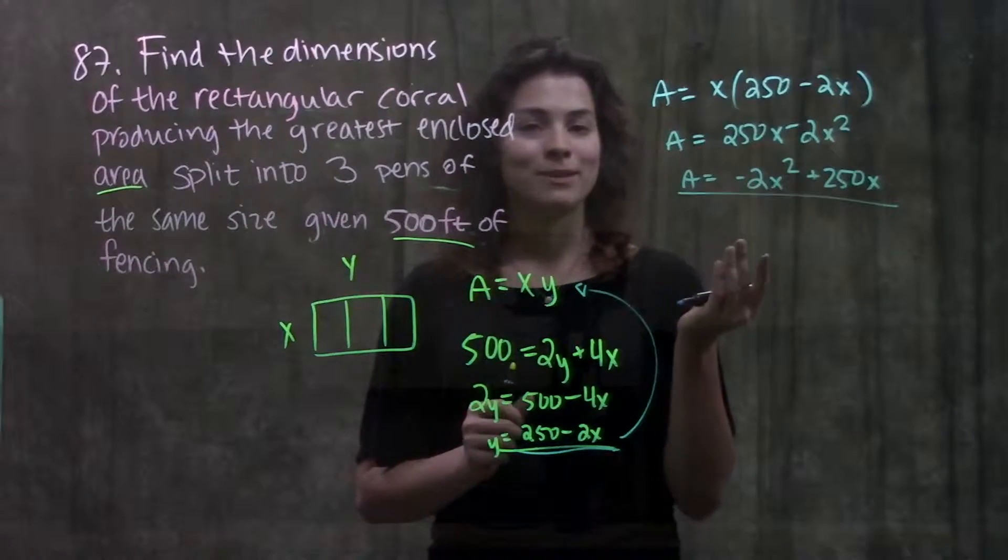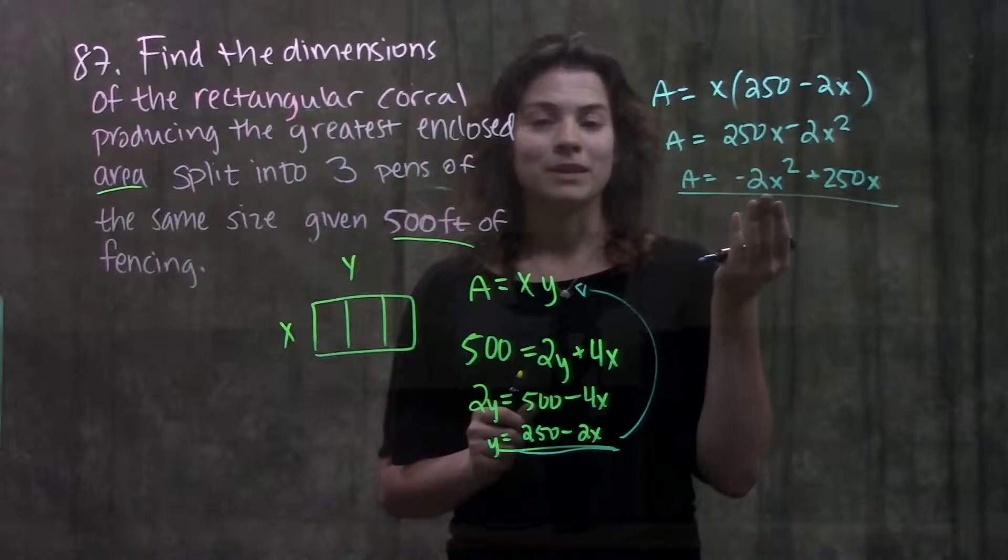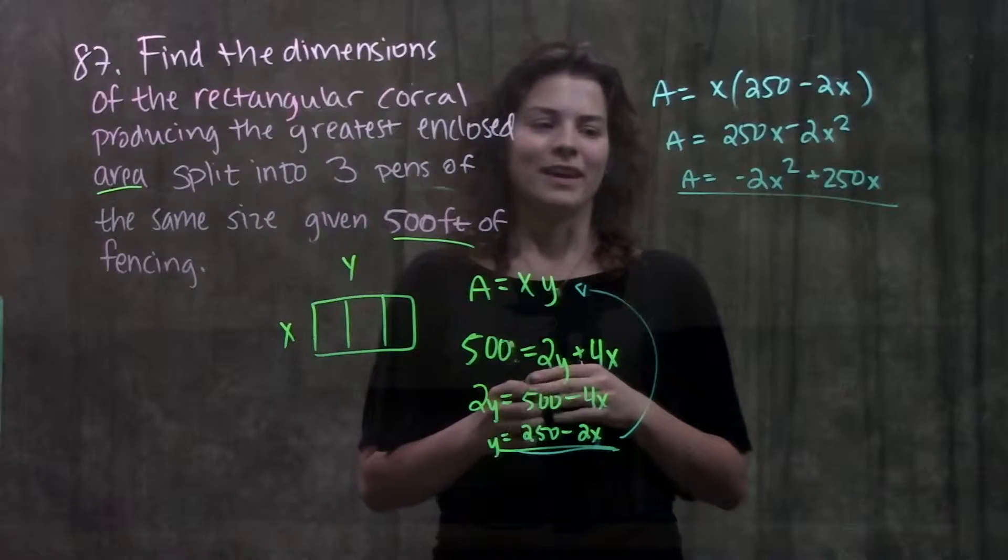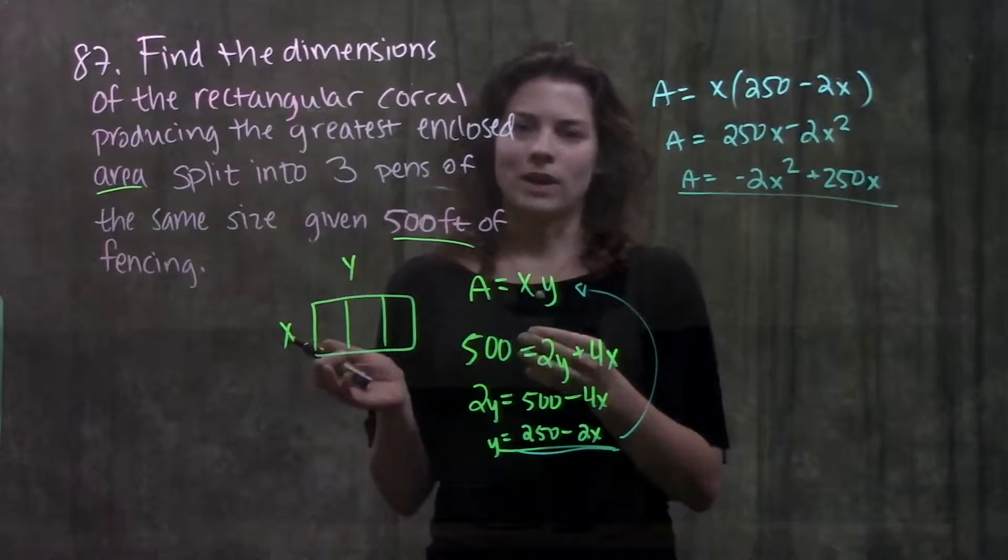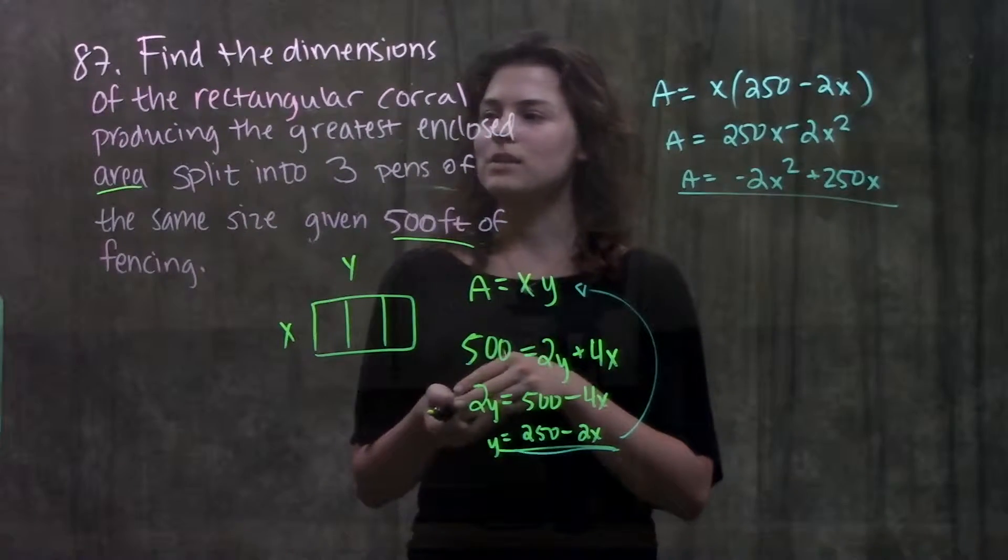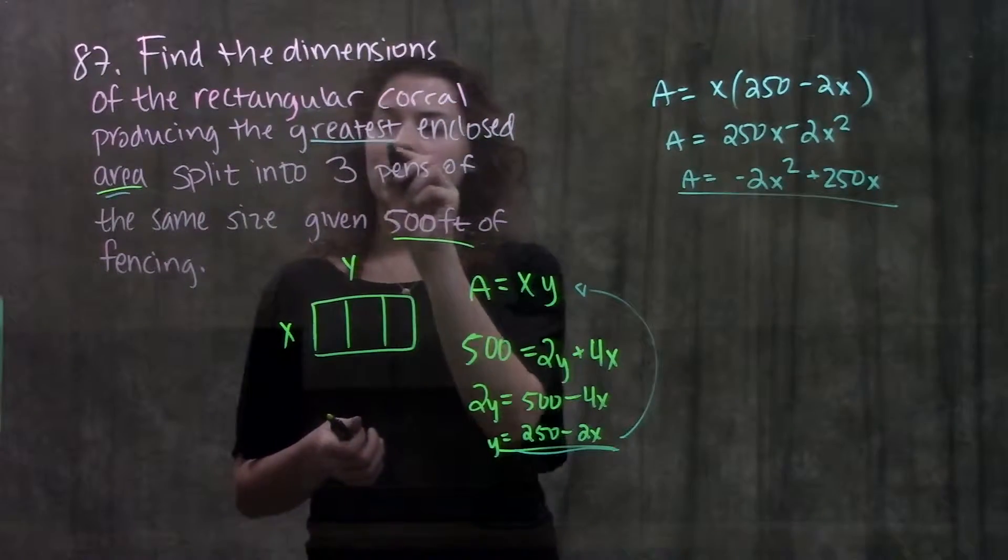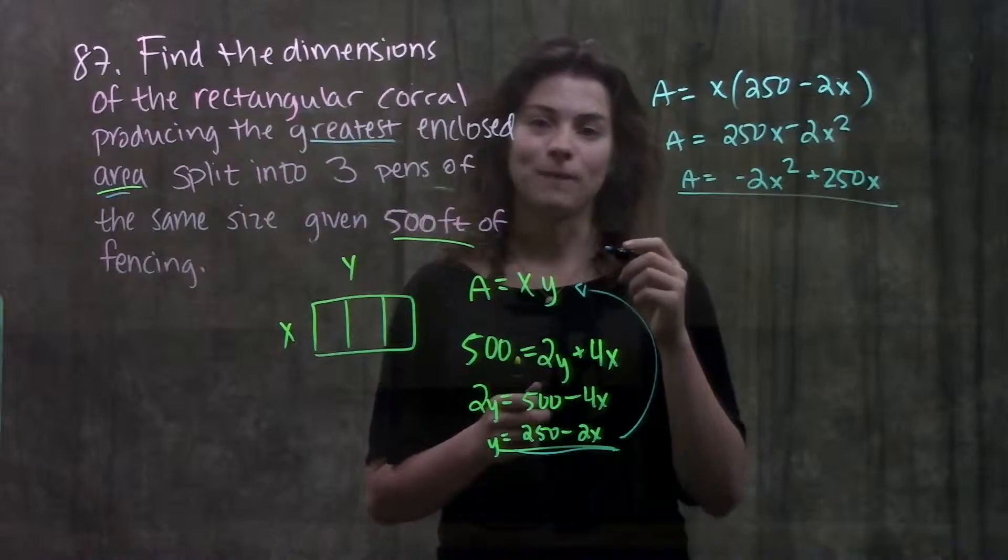Alright and at this point you might see where this is going. This looks really similar or really familiar. We have a quadratic here. Alright but how does quadratic relate to what they're asking us? Well if we go back to the problem to see what they were originally asking us for, they're asking us to find the greatest enclosed area. So we're looking for some maximum value.